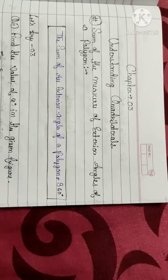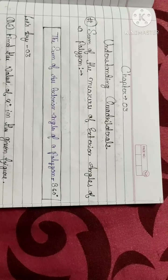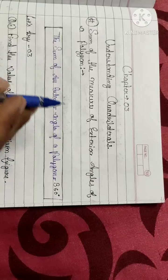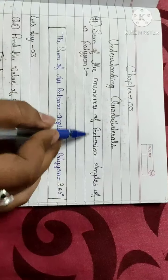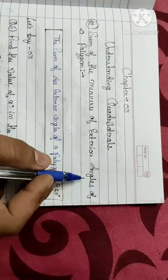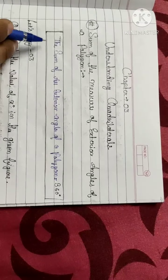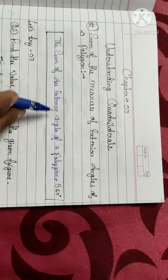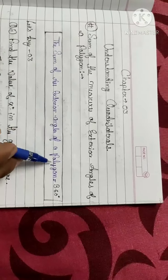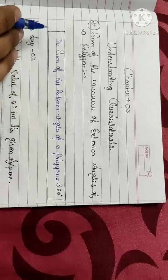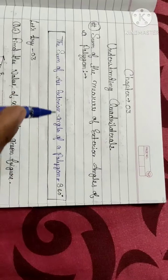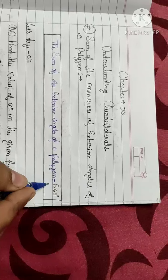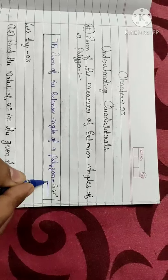Last lecture we discussed interior angles; today we will discuss exterior angles. We know that the sum of all exterior angles of a polygon is 360 degrees.